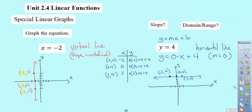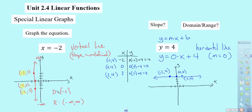When we look at these special graphs — vertical lines and horizontal lines — the domain and range discussion changes. For a vertical line, my domain is one single value, negative 2, because that's the only x value used. My range would be negative infinity to positive infinity since it goes all the way up and down. For a horizontal line, my domain is all real numbers since it extends left and right forever, but my range is a single value — using set notation, y equals 4 only.